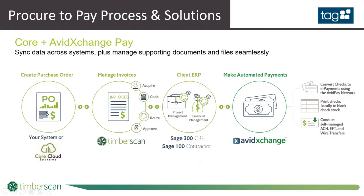The first step in the process is purchase orders, requisitions, and receiving tickets. Those can be created using our Core Cloud Systems, or CCS as we call it, our field purchasing solution. The documents can be created from anywhere on any device, and CCS is integrated with both TimberScan and Sage 300 CRE. Once the purchase orders are created, they can be sent to Sage 300 to create your commitments, and then the electronic purchase order is sent to TimberScan. Once you've finished your receiving ticket, those receiving documents also get sent to TimberScan electronically, so you have both your purchase order and your receiving tickets available in TimberScan as supporting documents for your two or three-way match when the invoice hits your door.